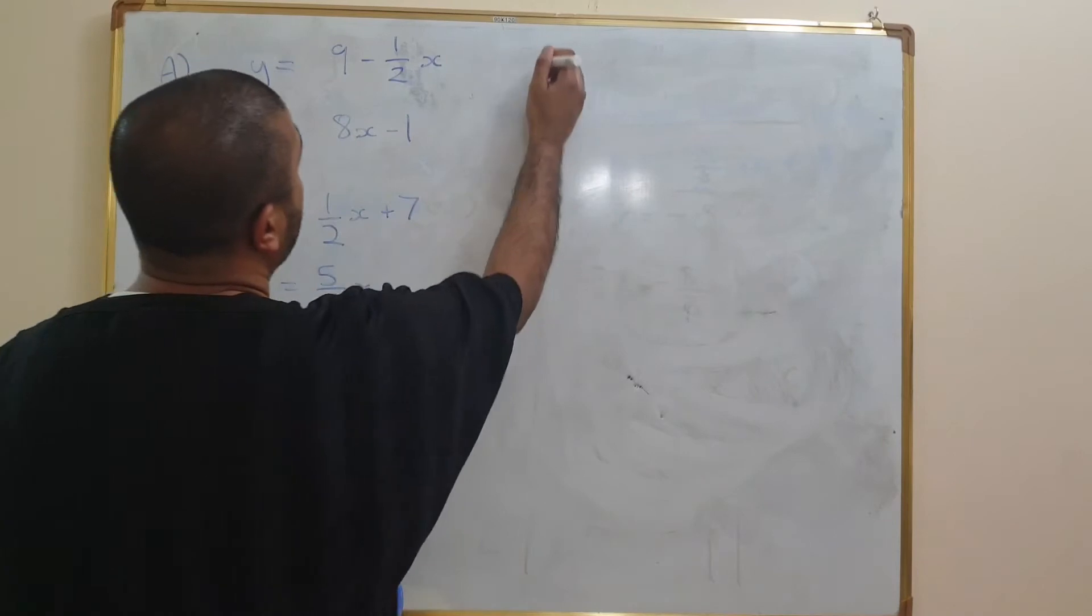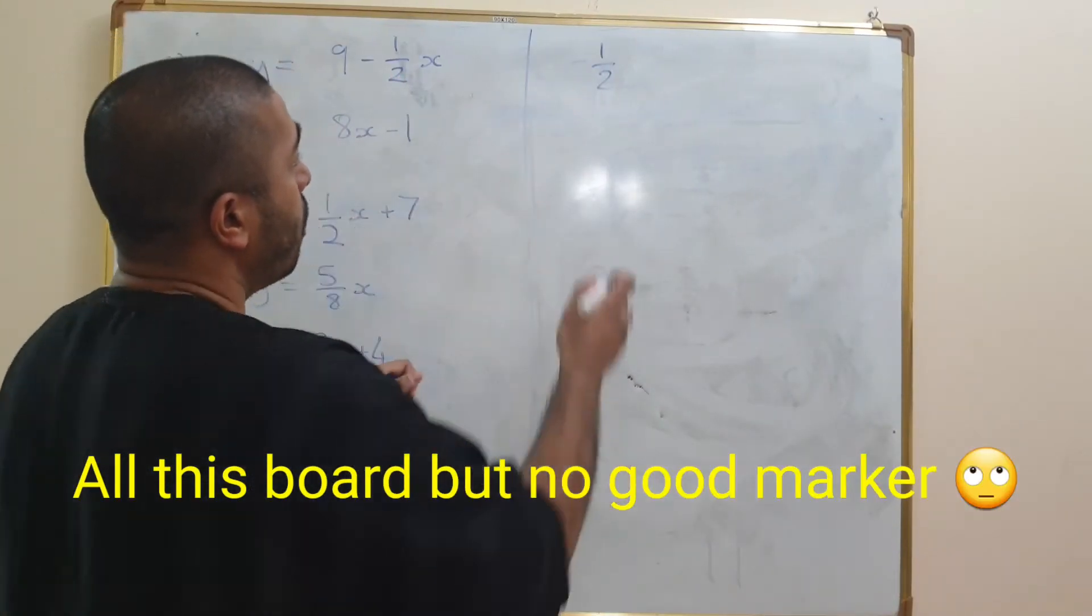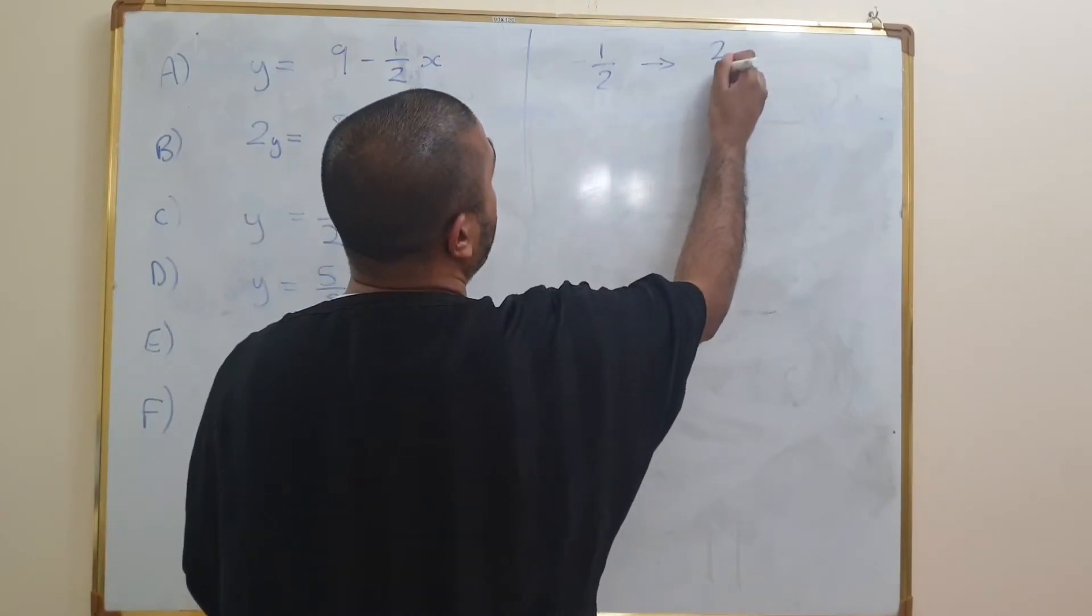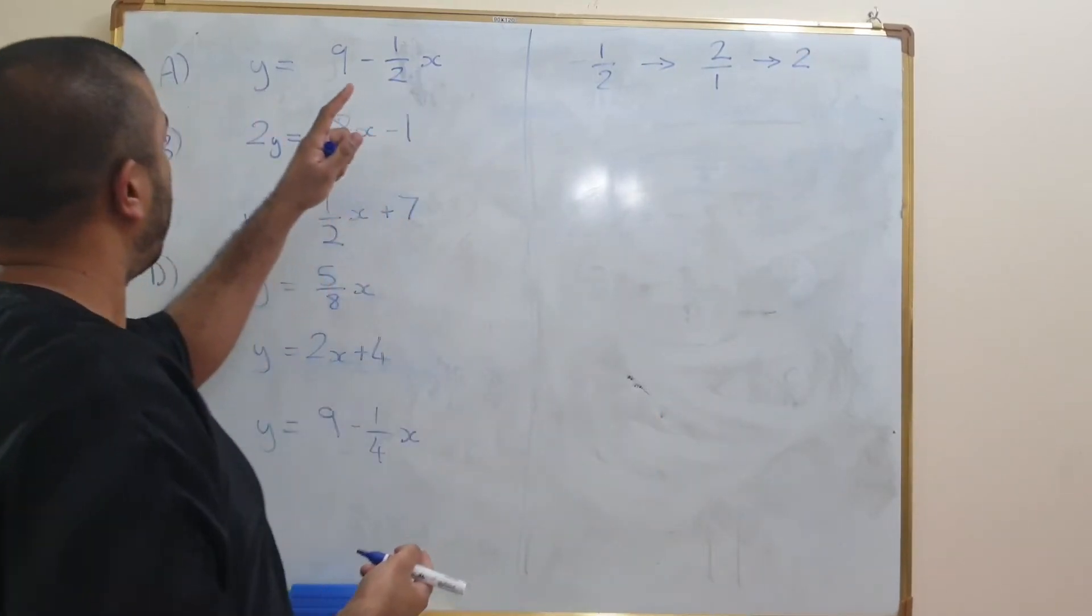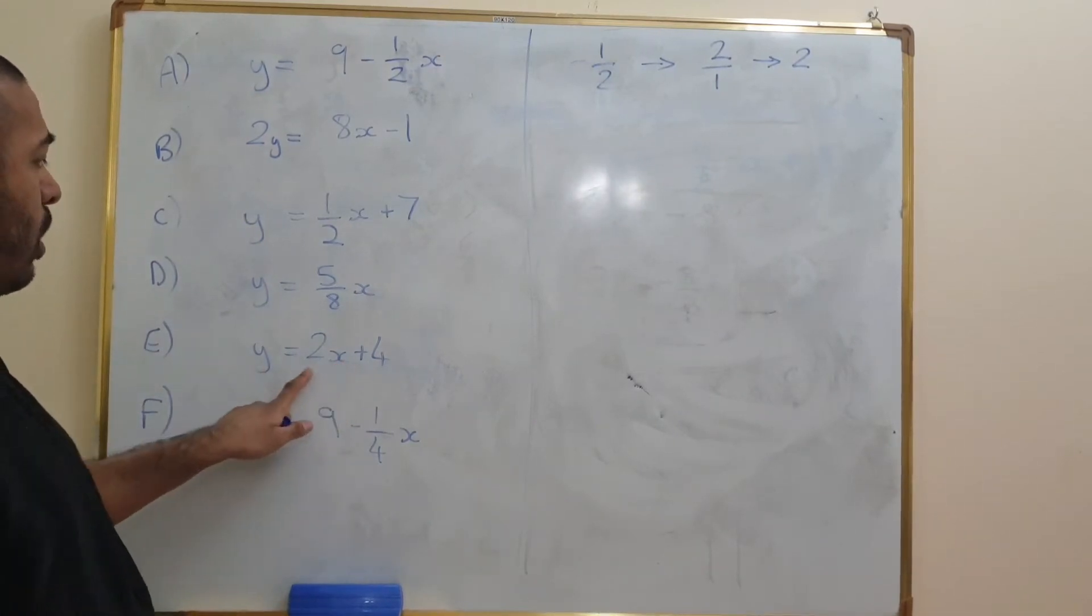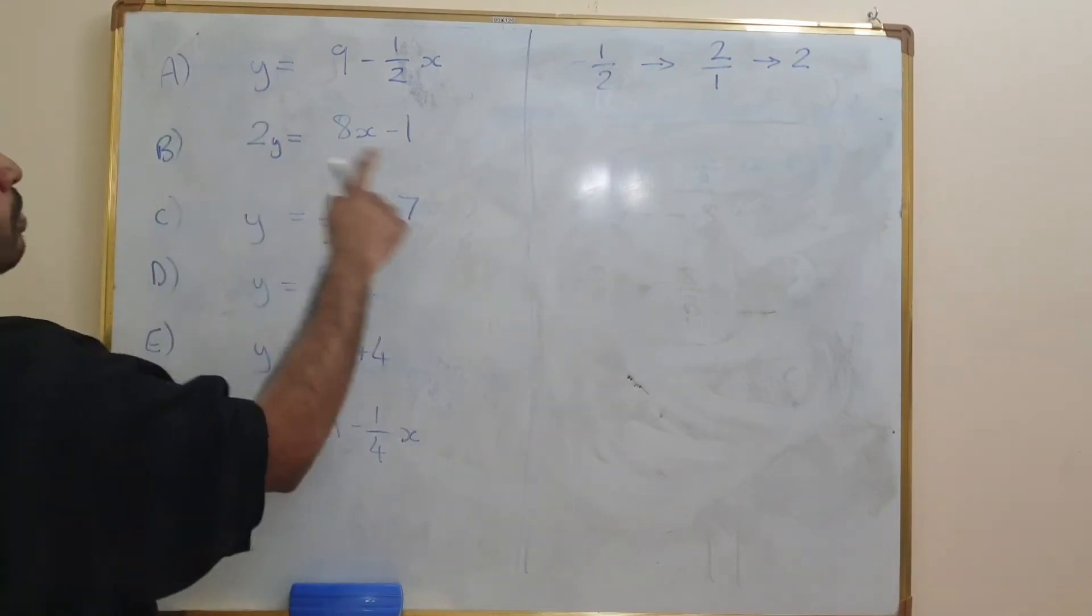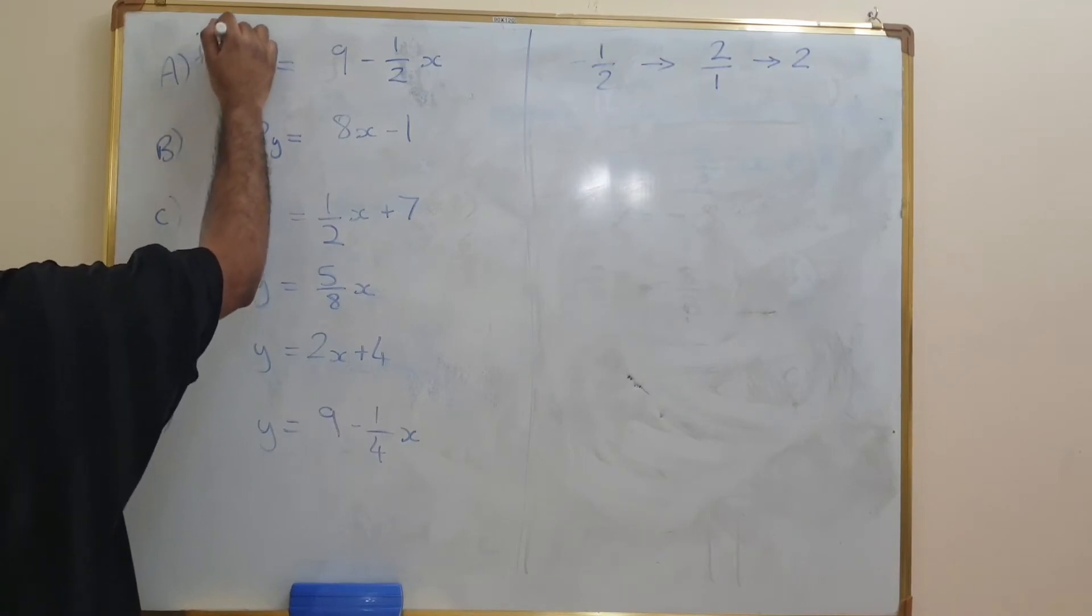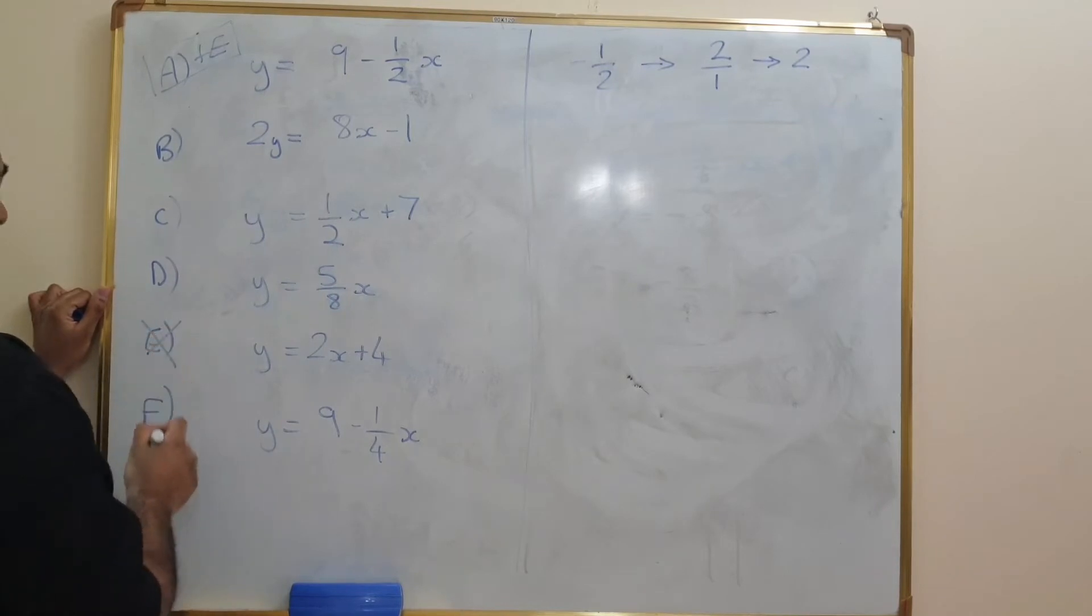So to start off with, the gradient of the first line is negative half. So its negative reciprocal is going to be 2 over 1, which is the same as 2. So is there any line here which has a gradient of 2? Yes, there is. E has a gradient of 2, so therefore we'll have A plus E. There's one matching pair, so I'm going to cancel that one off.